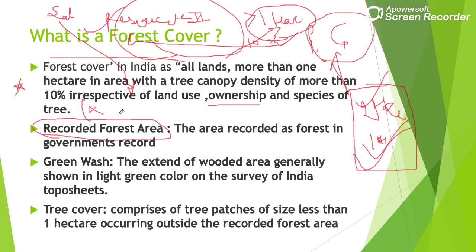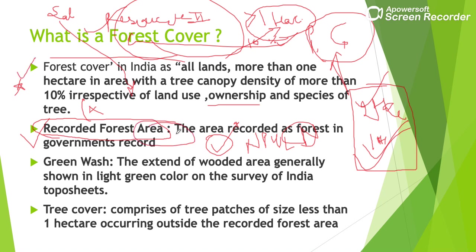The second definition is Recorded Forest Area, which is slightly different from forest cover. This refers to any land that has been officially declared as forest in government records — such as national parks, wildlife sanctuaries, or notified forests. Unlike forest cover, private orchards are not included in recorded forest area.